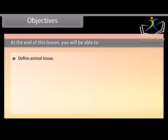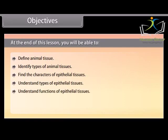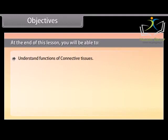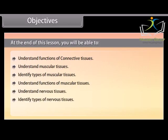At the end of this lesson, you will be able to: define animal tissue, identify types of animal tissues, find the character of epithelial tissues, understand types and functions of epithelial tissues, find the characters of connective tissues, understand types and functions of connective tissues, understand muscular tissues, identify types and functions of muscular tissues, understand nervous tissues, identify types and functions of nervous tissues.